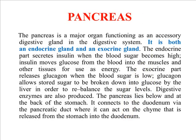The pancreas is a major organ functioning as an accessory digestive gland in the digestive system. It is the only organ that works as both an exocrine and an endocrine gland. The endocrine part secretes insulin when blood sugar becomes high; insulin moves glucose and allows more absorption of glucose inside the tissue. Thus it is very important for the regulation of proper glucose levels in the blood. When we have a much larger amount of sugar, the secretion of insulin is increased by the pancreas. The pancreas lies behind the stomach and connects to the duodenum via the pancreatic duct.